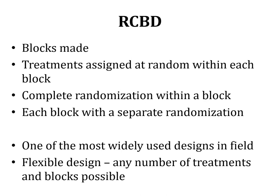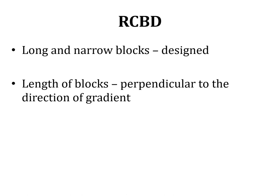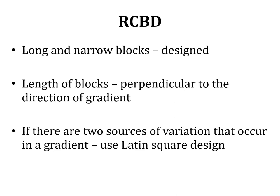To recap: in RCBD, the field is divided into different blocks first, then within each block the treatments are assigned — each block has its own randomization, and each block has all of the treatments. In RCBD, long and narrow blocks are designed with the length of the blocks perpendicular to the direction of the gradient. If there are two sources of variation occurring in a gradient, another design — the Latin square design — must be used. RCBD is useful only when there is one significant source of variation other than treatment.